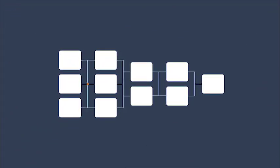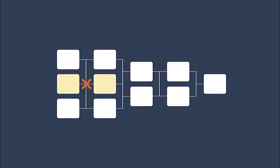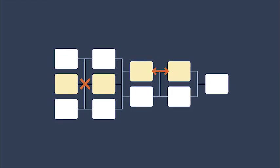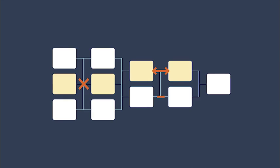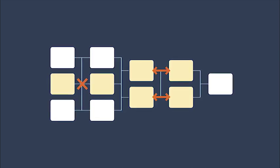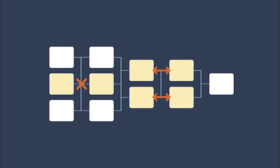For example, simple logic models may suggest linearity and causality where it does not exist. Similarly, depicting complicated relationships or influential factors or conditions using logic models can be challenging. A red X appears between columns causing adjacent boxes to turn yellow, and a double-headed red arrow appears between other columns.